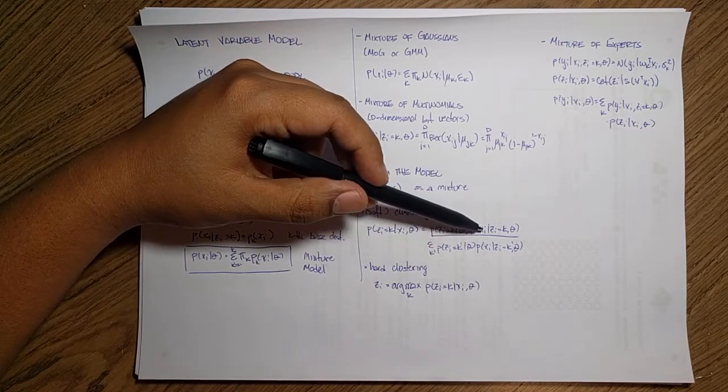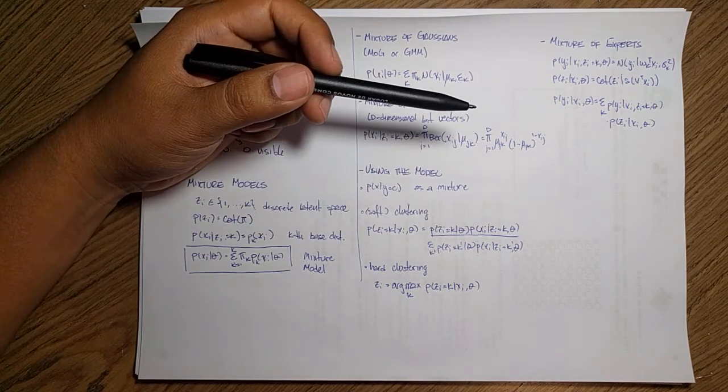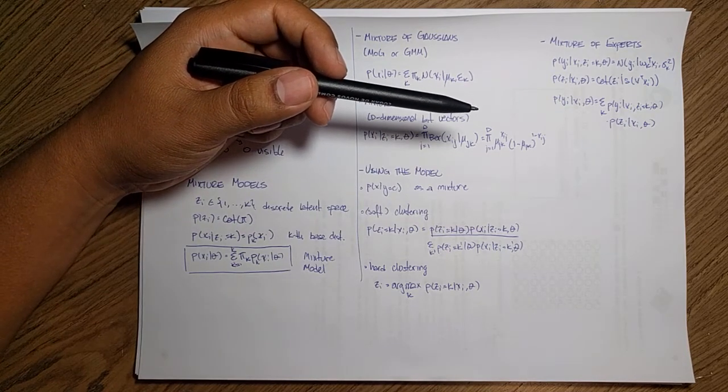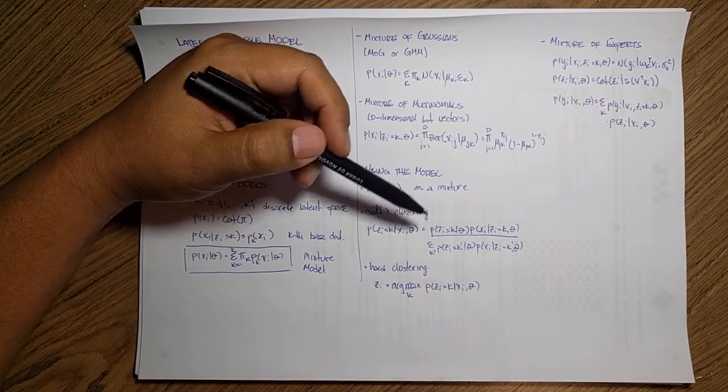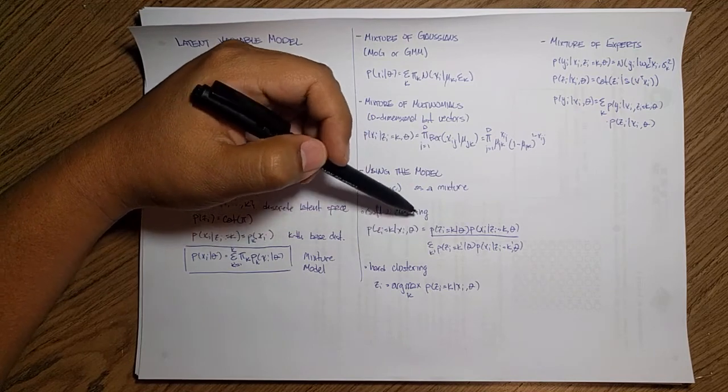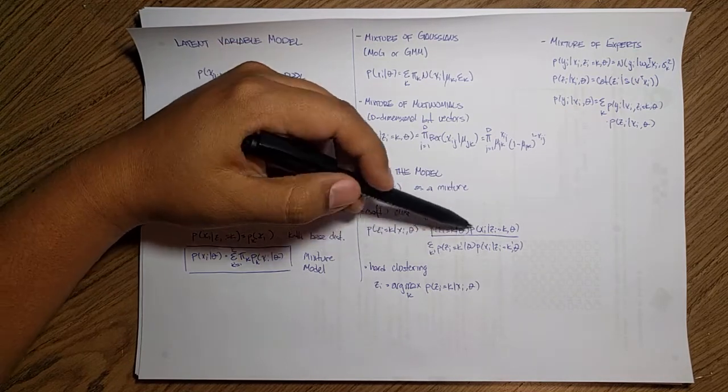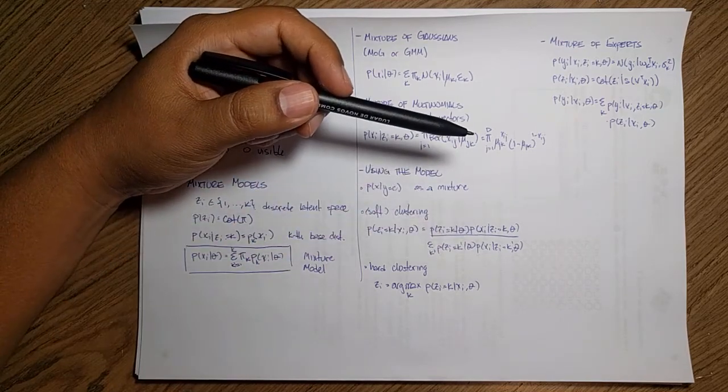And then my likelihood of the data with respect of that particular cluster or that particular expert, if you want, gives me how good it is fit to that particular model. So this is what we call the responsibility of the model, because this cluster is being responsible of modeling that particular data point.